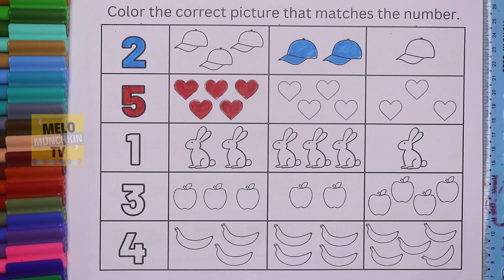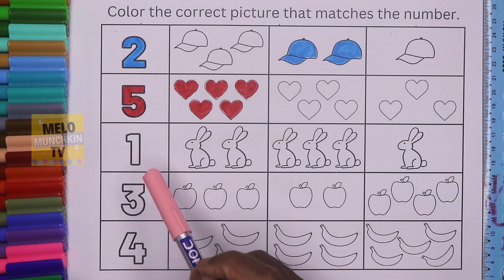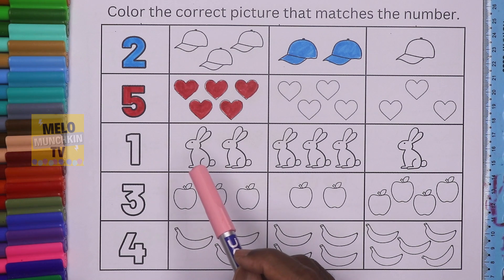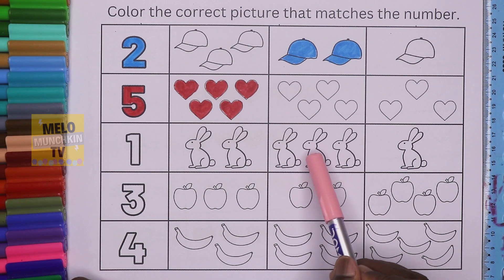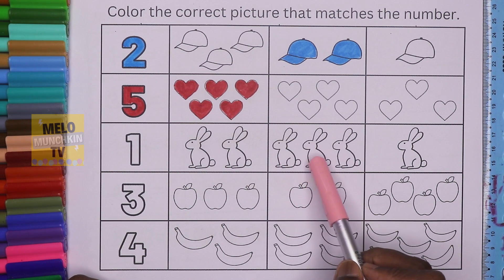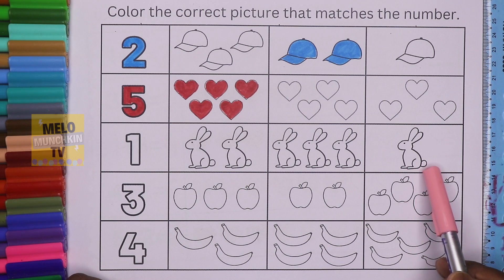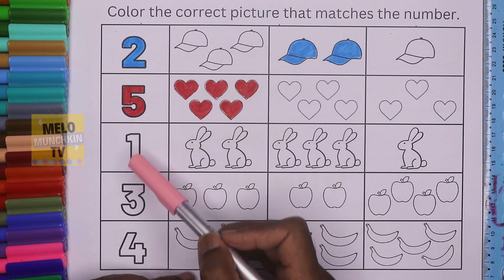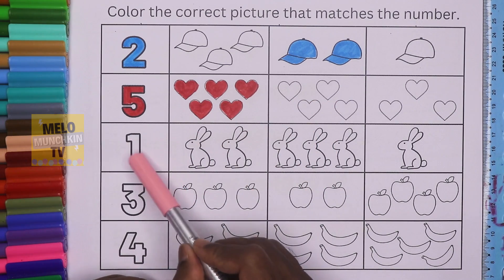The third number is number one. We need to find out number one in these boxes. This one has two rabbits. This one has three — one, two, three. Here: one, two. And here: one, two, three. The last box has only one — so this is the correct answer. Let's color it light pink.